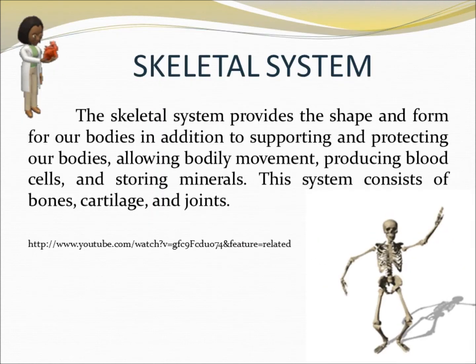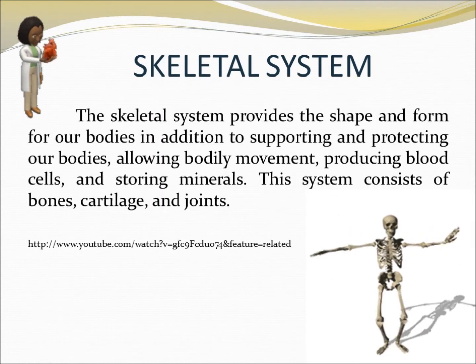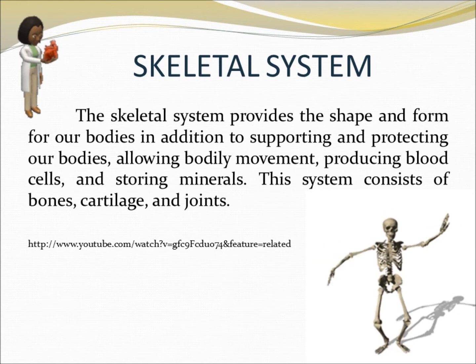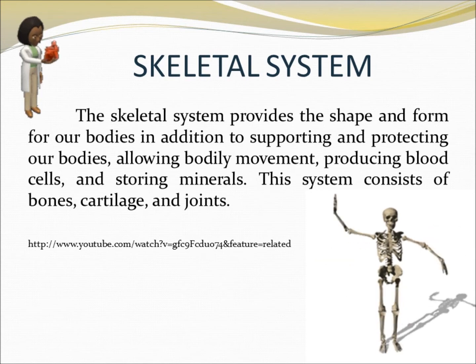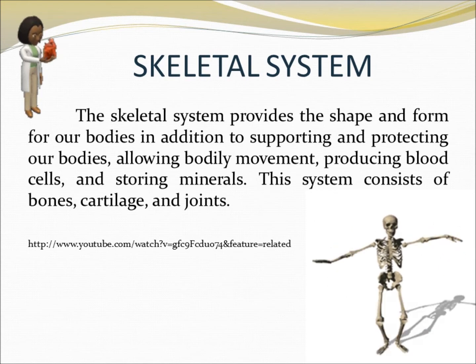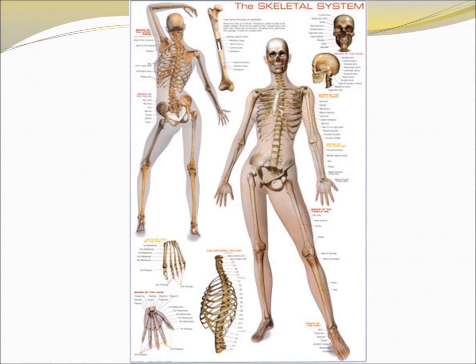The skeletal system provides the shape and form of your body, in addition to supporting and protecting the body, allowing bodily movement, producing blood cells, and storing minerals. It consists of bones and other parts. Here we can see the parts of the human skeleton.